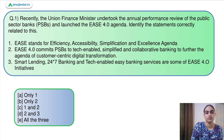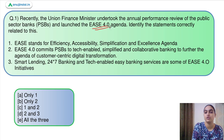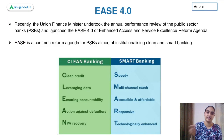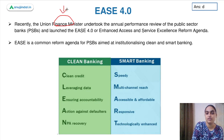Moving ahead to the very first question now. It says: recently the Union Finance Minister undertook the annual performance review of the public sector banks and launched the EASE 4.0 agenda. You have to identify the statements which are correctly related to this. So let's discuss a bit about this EASE 4.0 agenda and then we will come back to our question. The Union Finance Minister, after doing the review, has now launched EASE 4.0.